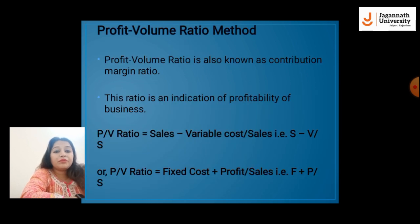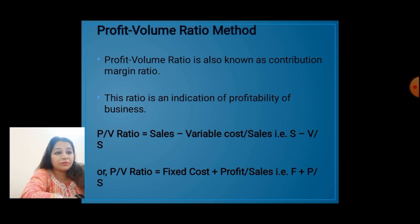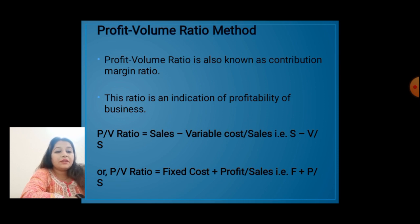Next is the profit volume ratio method. Profit volume ratio is also known as contribution margin ratio. This ratio is an indication of the profitability of a business. We call profit volume ratio as PV ratio. PV ratio is equal to sales minus variable cost upon sales, that is S minus V upon S. The second formula is PV ratio is equal to fixed cost plus profit upon sales, that is F plus P upon sales.